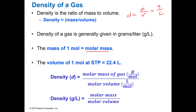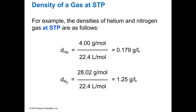The mass of a mole is the molar mass. The volume of one mole at STP is 22.4 liters. That gives us a way of backing into the density if we know the mass and the volume. Density in grams per liter is the molar mass, which is grams per mole, divided by the molar volume, which is liters per mole. If it's at STP, then it's going to be 22.4 liters. For example, the density of helium at STP: with a molar mass of 4 grams per mole, it still occupies 22.4 liters, giving a density of 0.179 grams per liter.